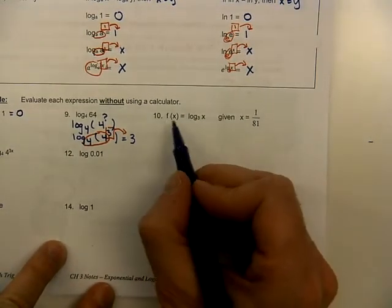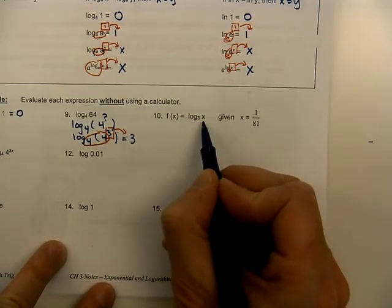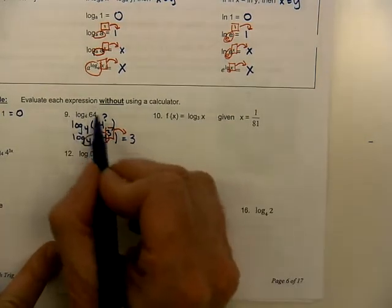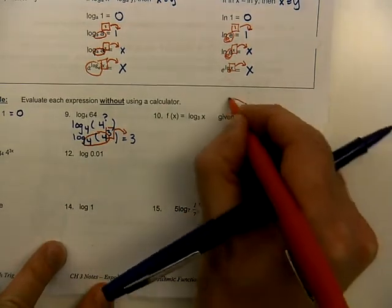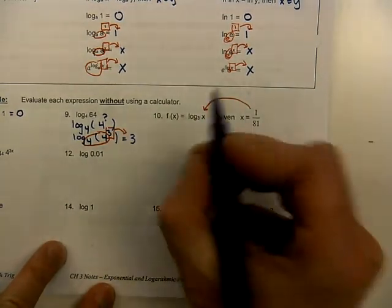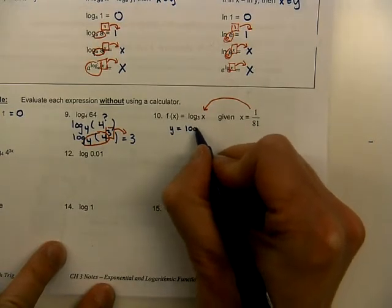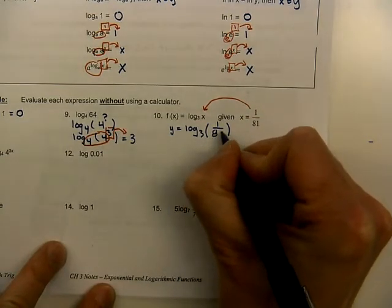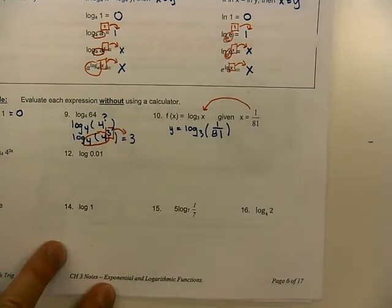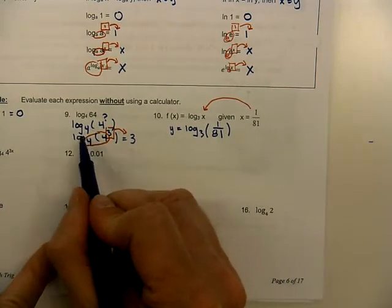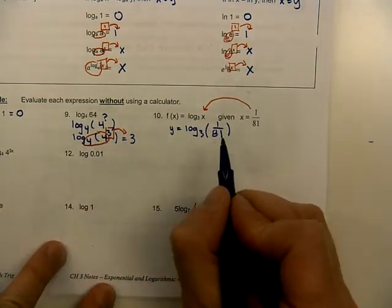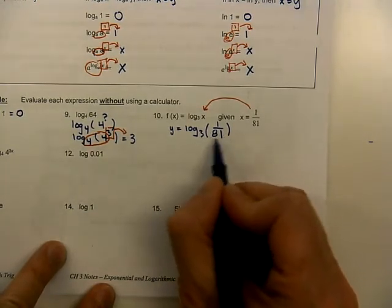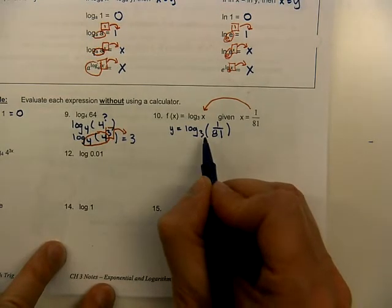Here's number 10. Our function is log base 3 of x — I need a number right there. We're told what the number is; it's in another column. This is how some of your book problems are set up — they split the problem into two parts and you have to take the input and plug it in. So that gives us log base 3 of the fraction 1 over 81. Again, we want these numbers to be the same, so we take the bigger number and try to make it match the smaller number. Can we take that 81 and rewrite it in exponential form with the base of 3?